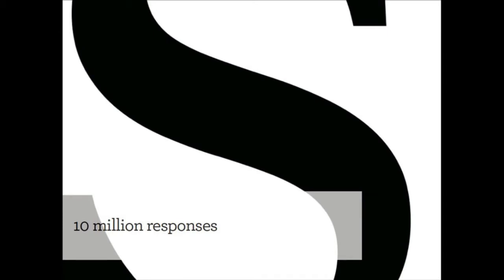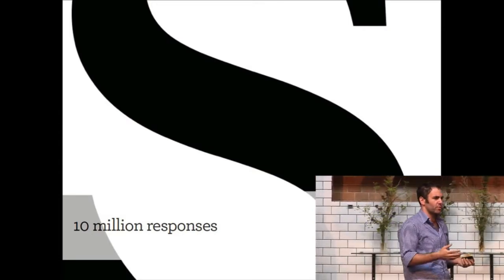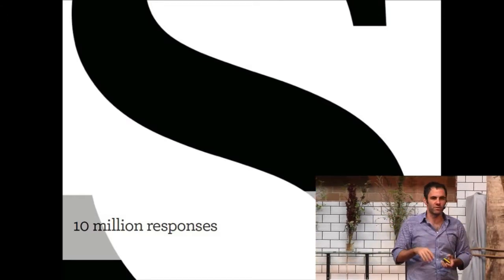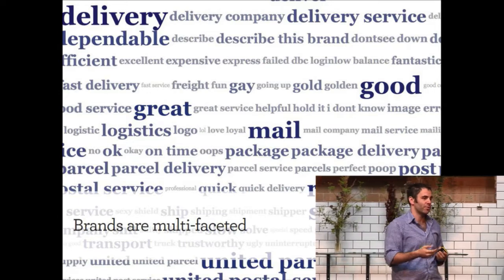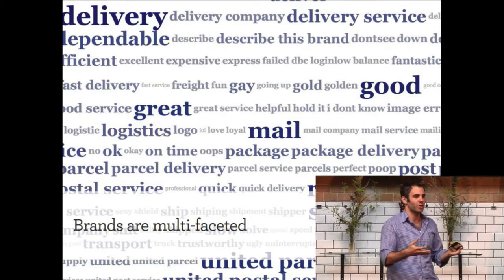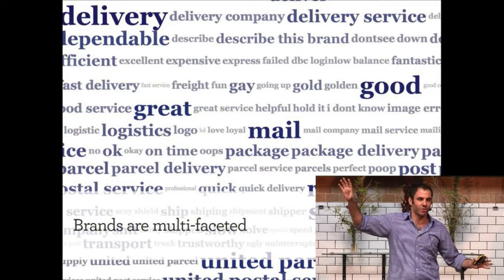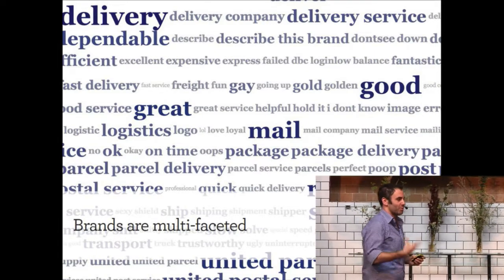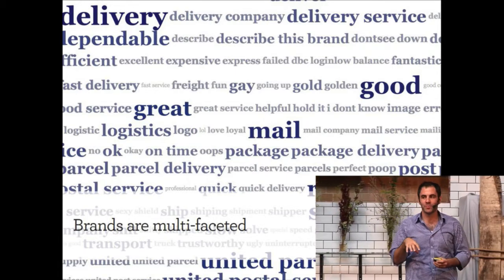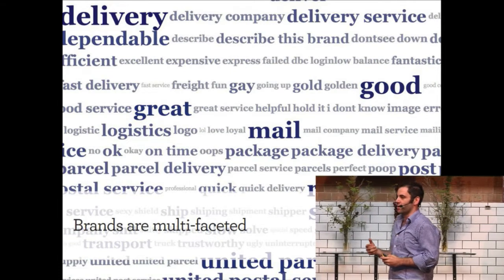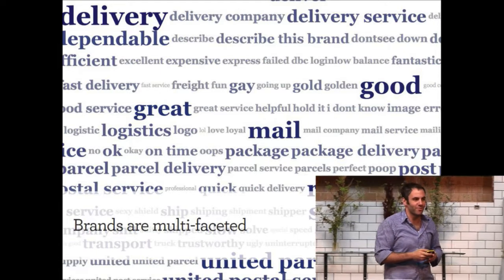It became this amazing look at brand perception. You could look across UPS or AT&T or Nike or any of the companies — there were about 1,200 companies on there — and it just had this snapshot of who they really were and what people really felt about them. If you work in marketing or have worked around brands, you'll immediately spot that there's often a large delta between what people actually say and what the brand thinks they stand for.